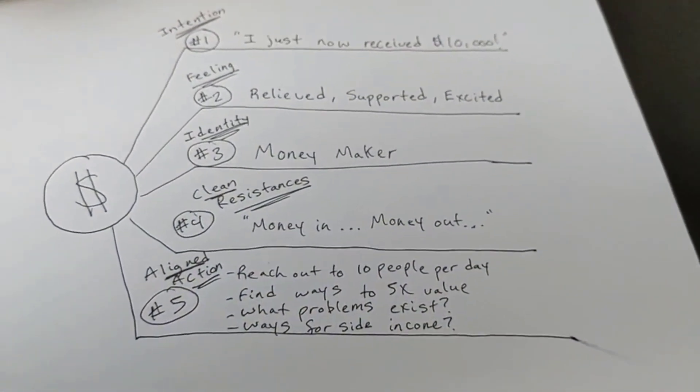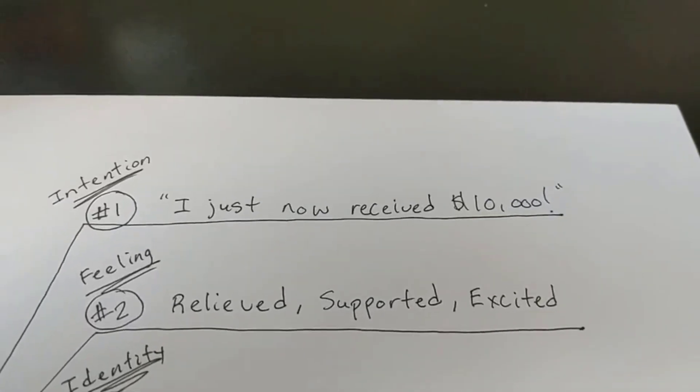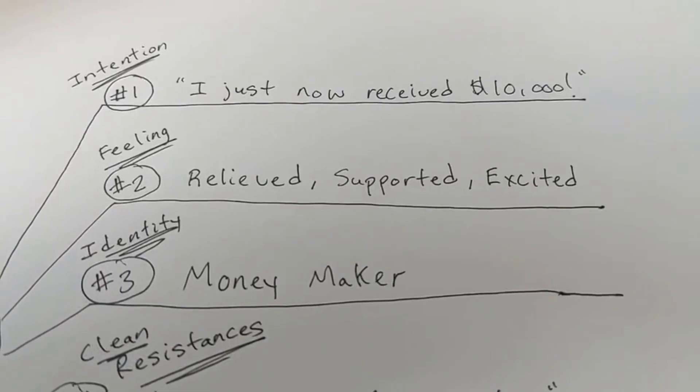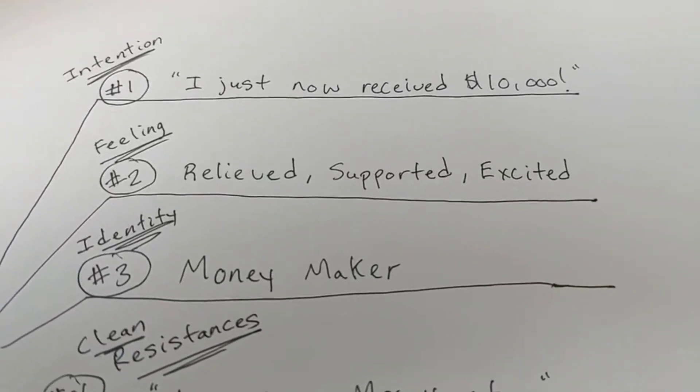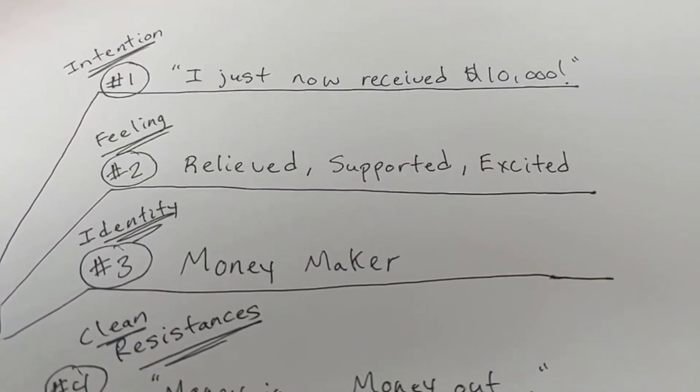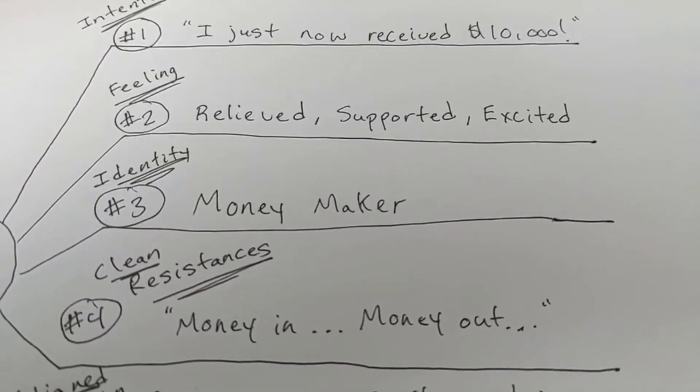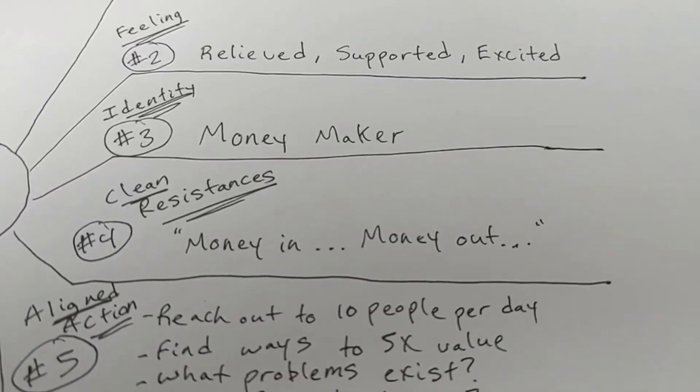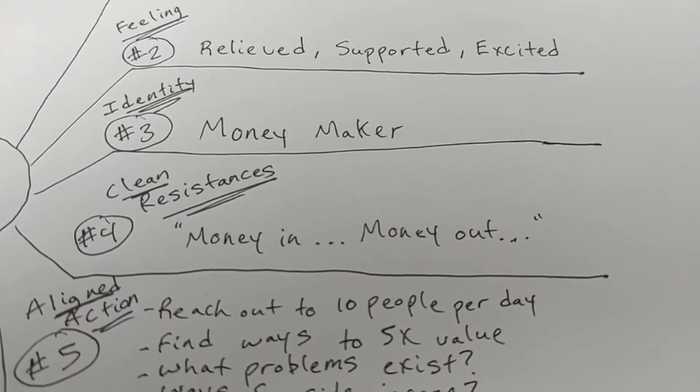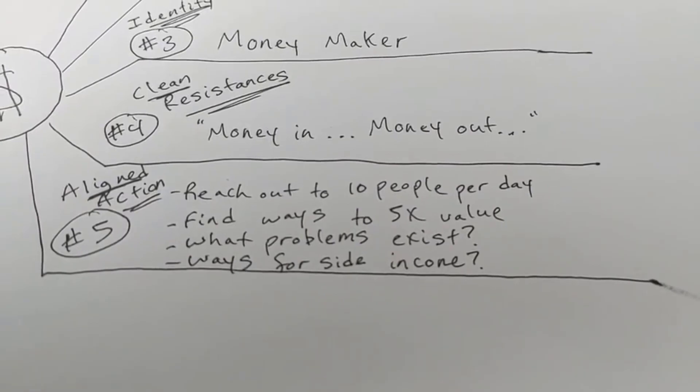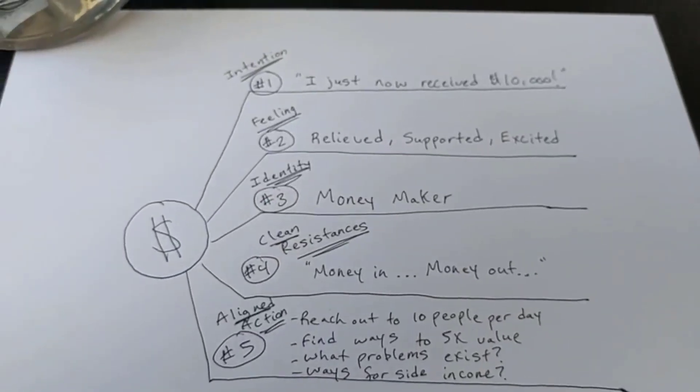So as you could tell, there's the five steps: intention, feeling, identity, the resistances, and then also aligned action. So within the feeling and the identity here, we need to mix these two together. And then you need to clean out your resistances. And then finally your aligned action, part of it, find three to four actions you could start taking on a daily and weekly basis. And it's going to move you towards your intention.